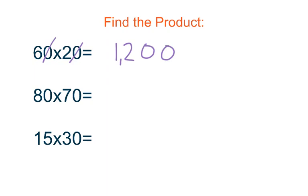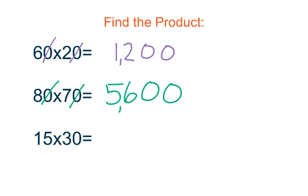Next up we have 80 times 70. We're going to cross out our zeros and place them in our product. 8 times 7 is 56, so our product is 5,600.